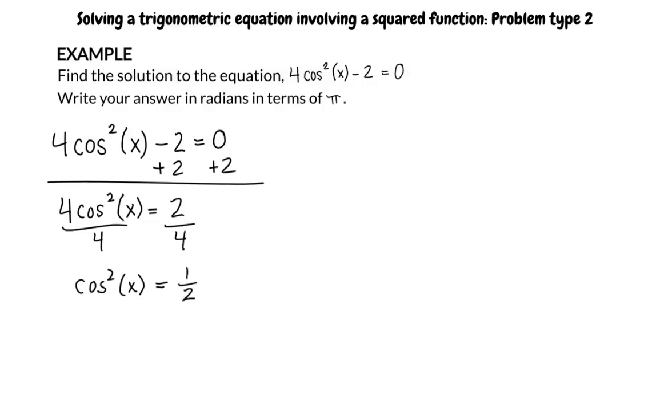We then divide both sides of the equation by 4 and write cosine squared of x equals 2 over 4, or cosine squared of x equals 1 half.